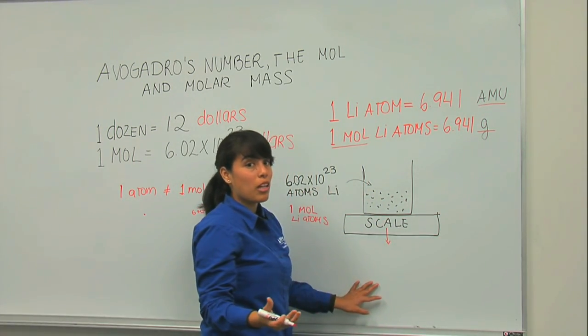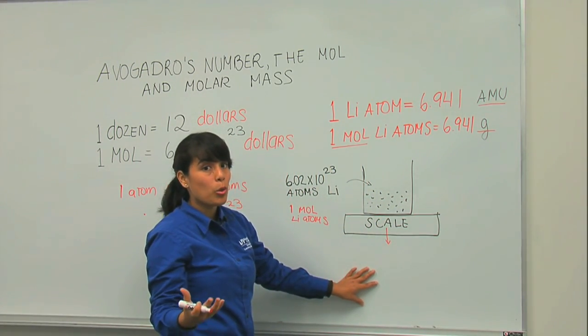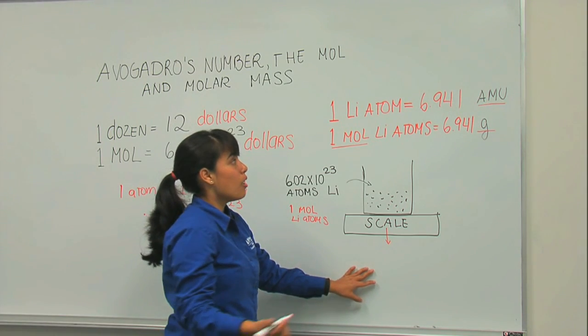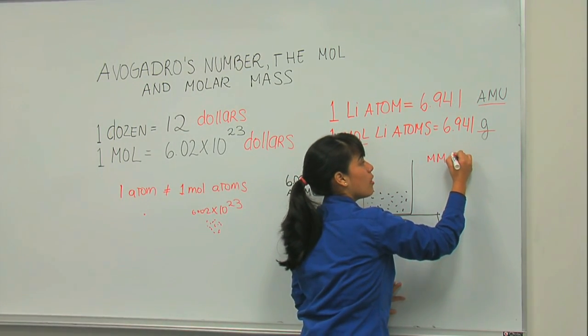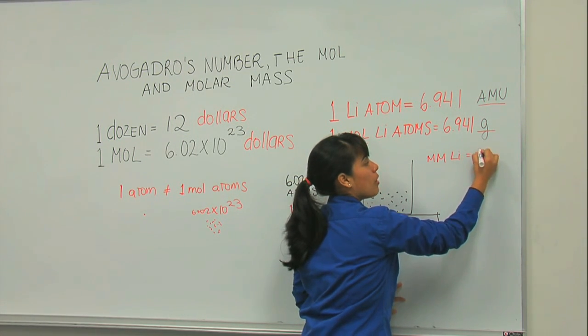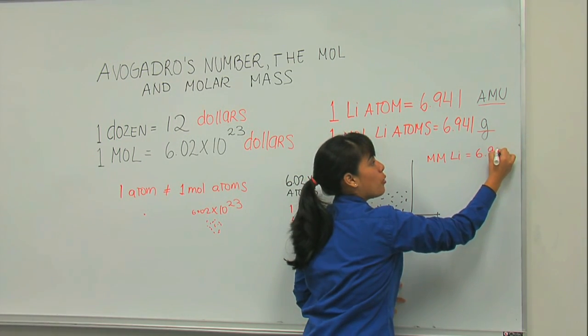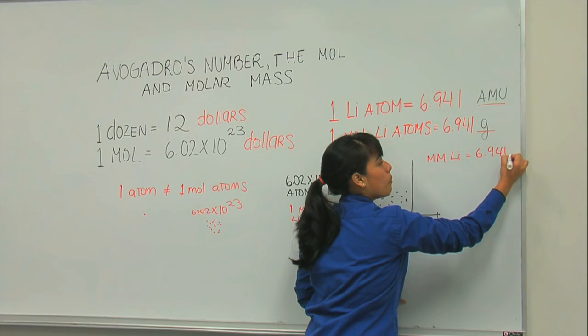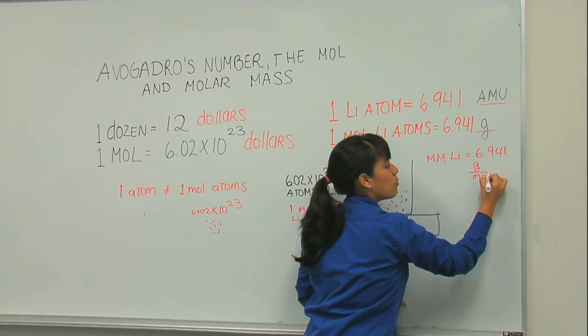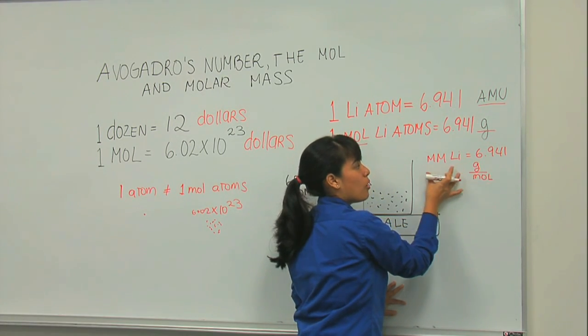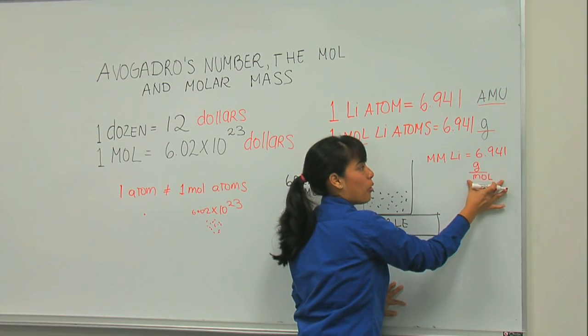So whenever you have one mole of lithium atoms, you have the same numerical value but a different unit, grams. So now you're ready to find any molar mass of any compound. So the molar mass of lithium is 6.941 grams per mole. These are the units of the molar mass. Always remember that.